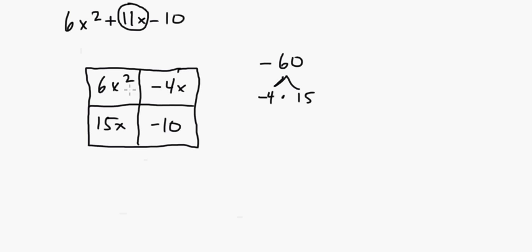All you have to do now is factor this out. Look at this term and this term and see what they have in common. I can take out a 2x. If I take out a 2x here, what do I have left? Well, 6 ÷ 2 is 3, x² ÷ x is x. So if you did 3x × 2x, you get 6x². And then here, if I take out a 2x, I have a -2. -2 × 2x is -4x.